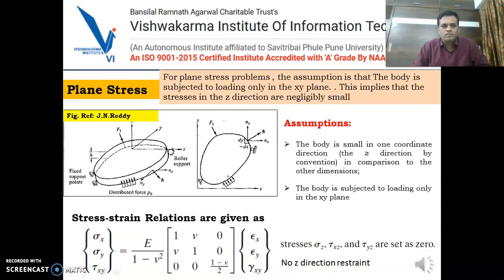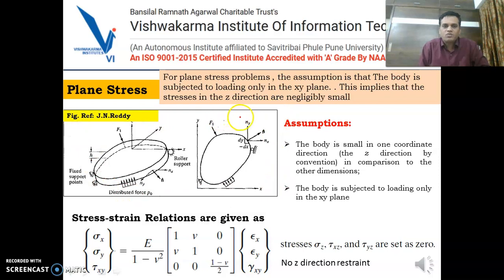Coming to the types of problems — basically all 3D problems can be approximated either as a 2D problem or 1D problem based on the condition of the problem. When we say the problem can be approximated from 3D to 2D, if we consider a rectangular plate where the two dimensions — length and width — are considerably larger than the thickness of the plate, such a problem can be analyzed as a 2D problem.